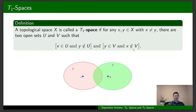We take any two elements x and y, and as long as there are two open sets U and V such that U contains x and U doesn't contain y, and V contains y and V doesn't contain x, then the space is D1. It follows directly from the definition that any D1 space is a D0 space, and we're going to see some examples showing that the converse is not true in general.